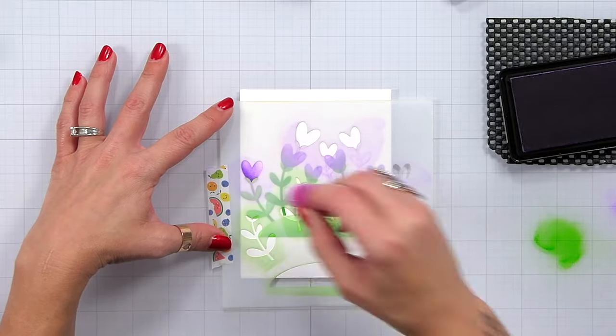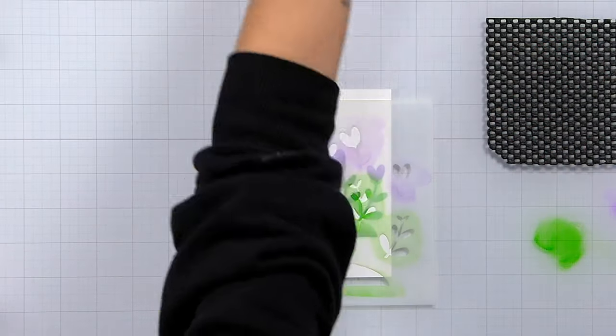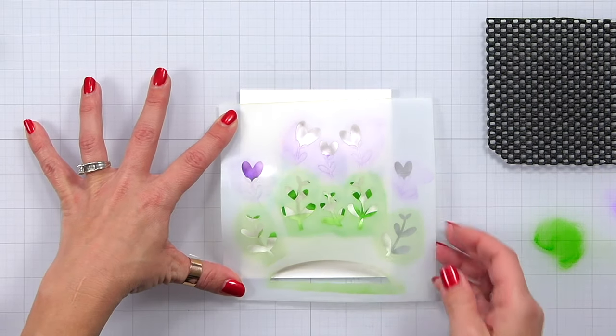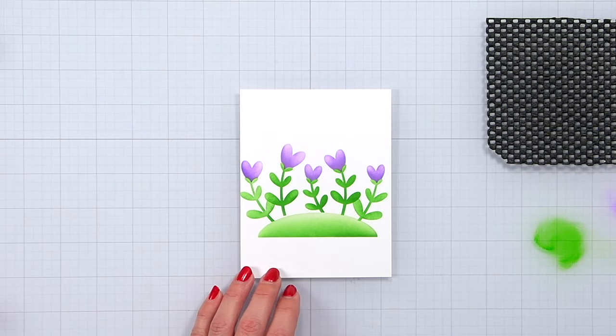So now once everything is all blended, I have the background done here, I'm going to set this off on the side and work on the stamping and coloring portion of my card.